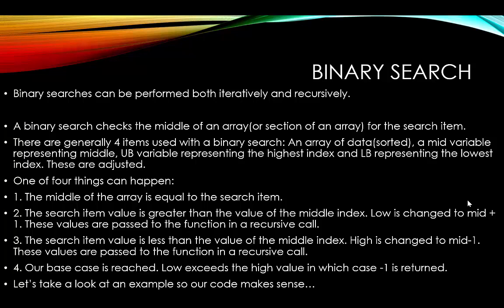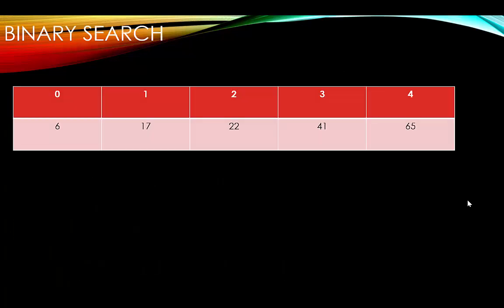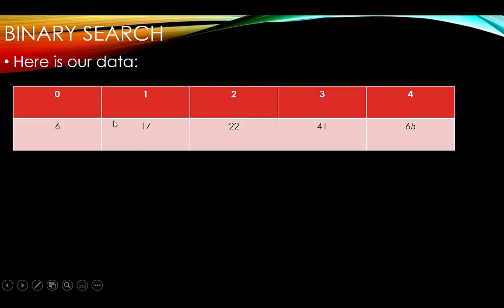Let's take a look at an example. We have indexes 0 through 4 — five indexes total. Index 0 is 6, index 1 is 17, index 2 is 22, index 3 is 41, and index 4 is 65. This data is in ascending order — it has been sorted, and that's a requirement for binary search.